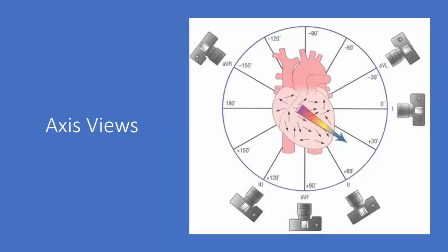Imagine that with the hexaxial reference system, each lead has a camera. As the conduction goes towards it, we see it positive. As it goes away from it, we see it negative. You might see an isoelectric or equifasic waveform if the axis is going perpendicular to it.